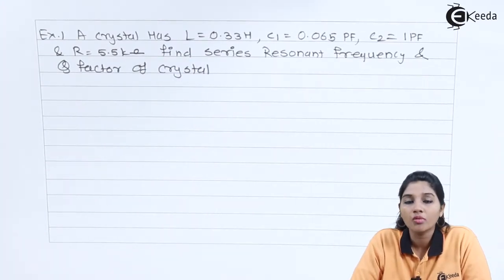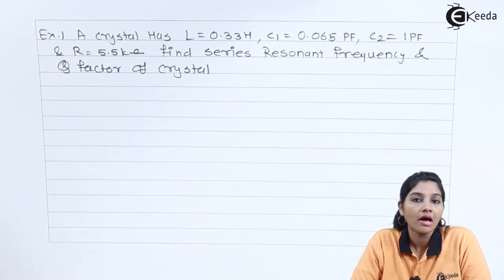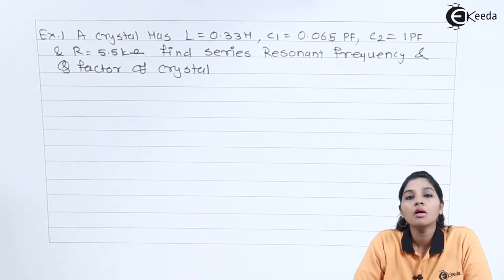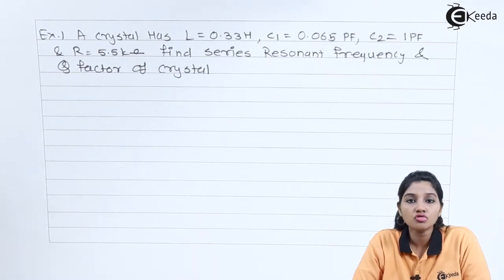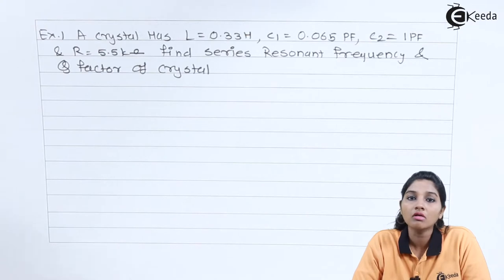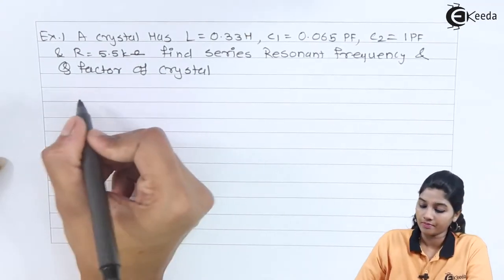We know that the crystal oscillator equivalent circuit consists of a series connection of R, L, and C1, connected in parallel with capacitor C2. Based on this, we have two frequencies: series resonant frequency and parallel resonant frequency. First, we will write down the given data and find out the series resonant frequency.